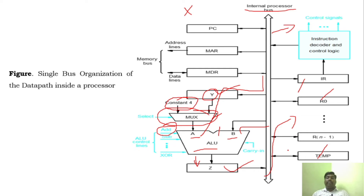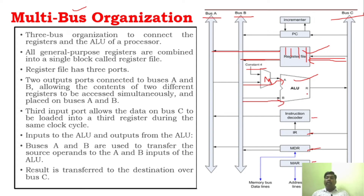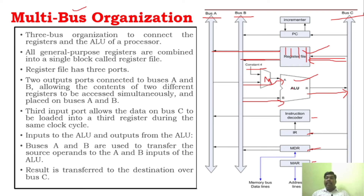In multi-bus organization, the ALU is much simpler. The bus is directly connected to input A through a multiplexer, another data reaches input B, and the output of the ALU can be directly connected to Bus C. There is no need for a Z register and no need for a Y register — those are eliminated.